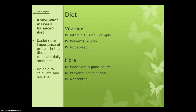Next comes vitamins. Vitamin C is the example — very easy to remember, and it prevents scurvy. Basically, vitamins prevent us from getting ill. If we don't have enough vitamins, our bodies can't do certain things, and this presents as disorders or illnesses. Vitamins can't be stored, and if you eat too much of them we just excrete them from our body, so you need to make sure you're regularly eating the right amount of vitamins.